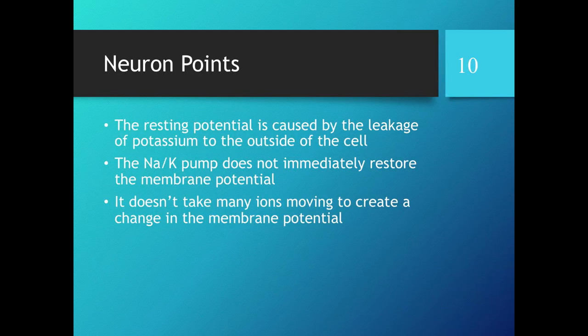To wrap up the main points on neurons: the resting potential — the fact that it's negative inside — is primarily because the membrane is leaky to potassium at rest, letting a little potassium out so that relatively speaking it's more negative inside than outside. The sodium-potassium pump is not what immediately restores the neuron to its resting potential — it's simply the closing of these ion channels. It doesn't take very many ions moving to create these electrical changes, and you can have thousands of action potentials before the battery essentially runs down.